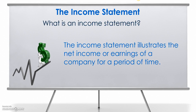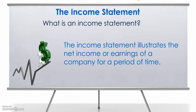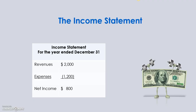The income statement illustrates the net income or earnings of a company for a period of time — a very different statement from the balance sheet. We prepare an income statement for a month, a quarter, or at year end. The title will show the time frame it encompasses, for example, 'For the Year Ended December 31st,' covering the full 12 months. The components of the income statement include revenues and expenses, and when you subtract expenses from revenues you get net income — or a net loss if expenses exceed revenues.